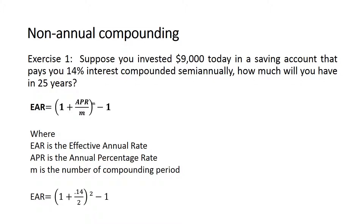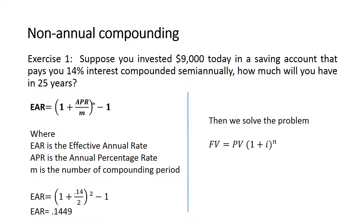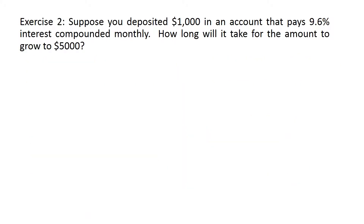The EAR formula uses the APR and m, the number of compounding periods. The APR given is 14% (0.14) and m is 2 because it's compounded semi-annually. Solving for this gives us an effective annual rate of 0.1449, which is 14.49%. Now we carry on with the exercise using the future value equation: present value is 9,000, interest rate is 0.1449, and number of time periods is 25 years, giving a future value of 265,113.226.